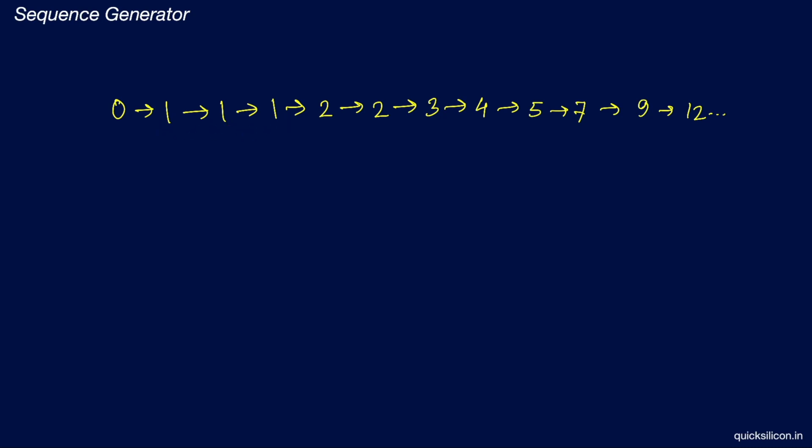...followed by three times 1, followed by two times 2, then 3, 4, 5, 7, 9, and so on. The problem also mentions that the sequence would not overflow a 32-bit value. This implies that the circuit would probably get reset before we reach the maximum value for a 32-bit number. This is helpful as we now know that our output should be 32-bit wide — that is all the problem statement specifies, and we are now required to design the sequence generator.